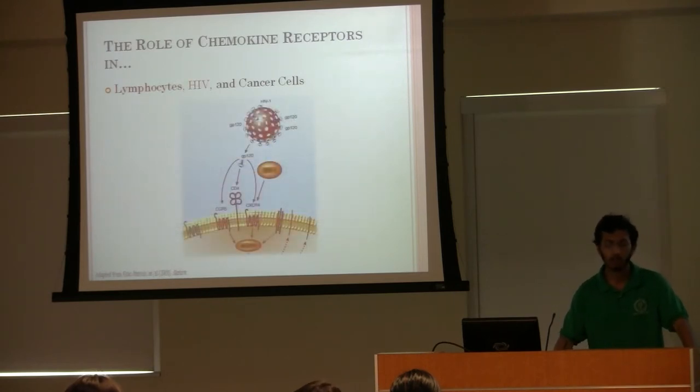CXCR4 also plays an important role in the expression of HIV. A class of HIV viruses known as T-tropic HIV basically home onto the CXCR4 receptors found on T cells, and use them to enter and infect the T cells, compromising the immune system of the host.